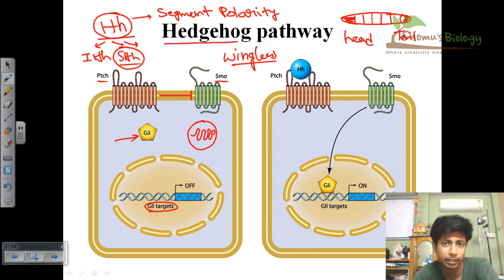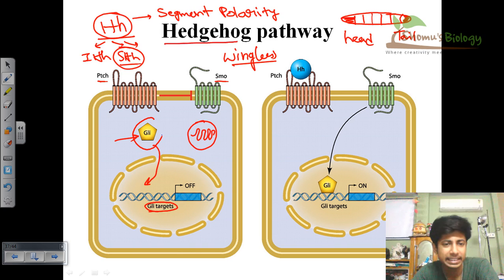GLI is a kind of signaling protein that will insert itself inside the nucleus and convey the signal there. That is not possible if there is no hedgehog molecule outside, because normally GLI is inactivated inside the cytosol. Once the hedgehog molecule binds with the Patch receptor on the surface, the process changes.